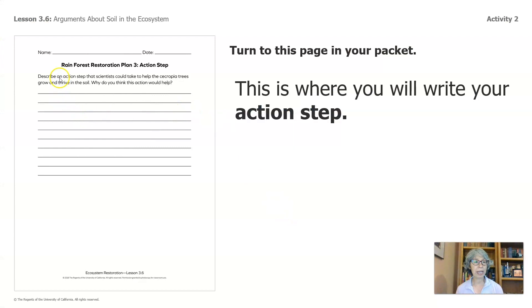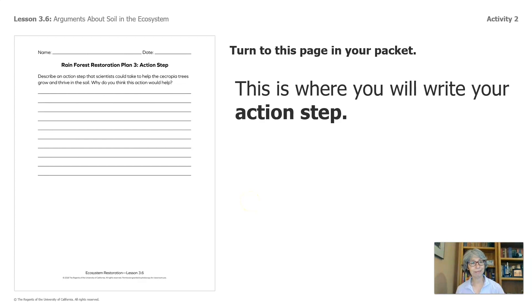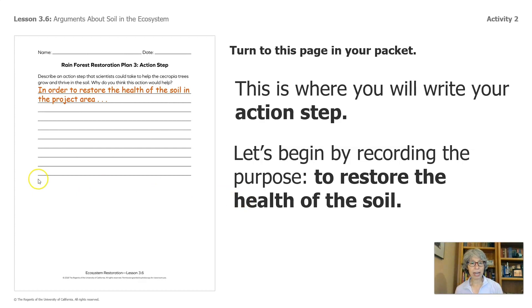Turn to this page in your packet: Rainforest Restoration Plan 3, action step. This is where you will write. And if you do not have the packet, paper and a writing utensil is all you need. Write your action step, and let's begin by recording the purpose: to restore the health of the soil. It's important to start with a purpose.